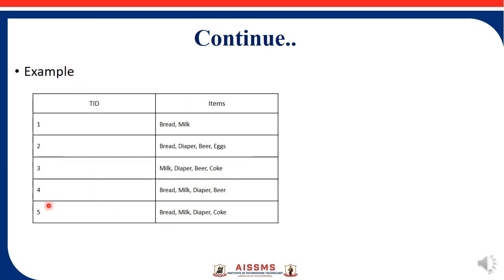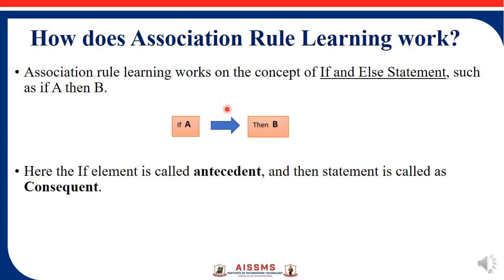For example, a transaction table has transaction IDs with items such as bread, milk, diaper, beer, eggs, and coke. Association rules work on the concept of if-then statements — for example, if a customer buys milk, then they also buy bread.